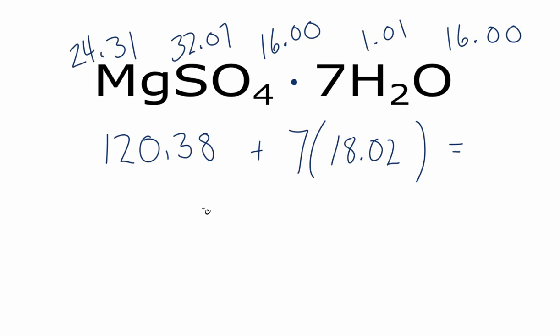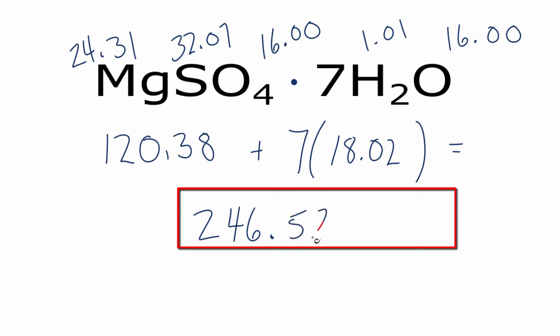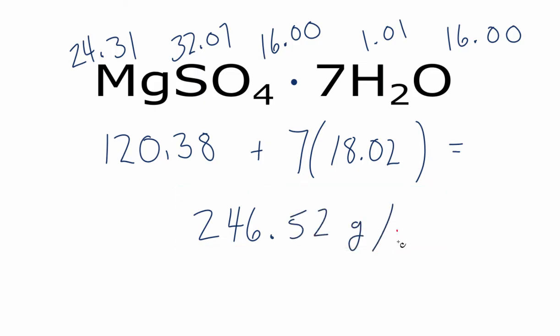If you do that, you find the molar mass for this MgSO4 with seven water molecules around it to be 246.52 grams per mole. This is Dr. B, and thanks for watching.